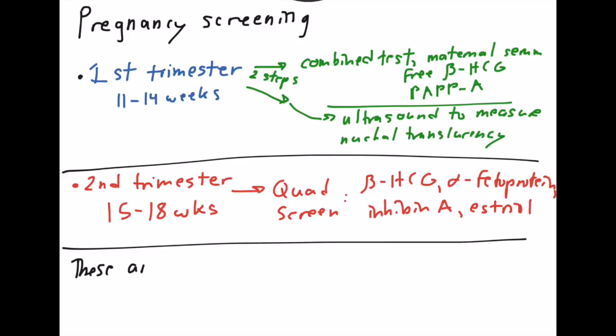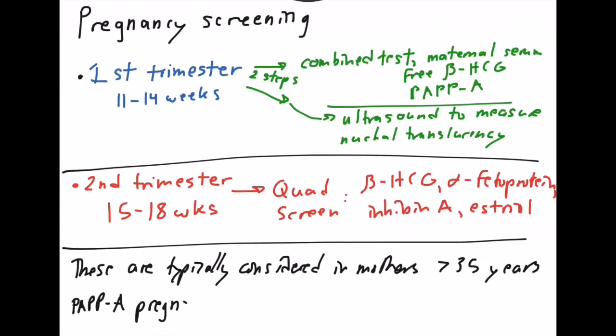When are you going to use these tests? These tests are testing for a few genetic abnormalities, specifically the trisomies: Down, Edwards, and Patau. Those are typically thought of as occurring in older mothers greater than 35 years.